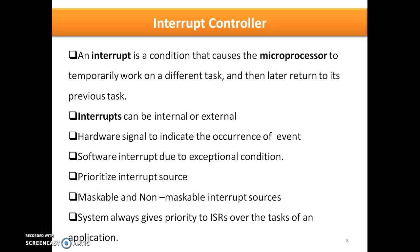If more than one interrupt source is available on a system, prioritizing the interrupt sources is important. While assigning priority, non-maskable interrupt sources are given the highest priority because the CPU must immediately pay attention to them — they are usually raised by the kernel and cannot be made to wait. Maskable interrupts are sources which can temporarily be deactivated or kept in a waiting state. Interrupt priority plays a major role in system design.